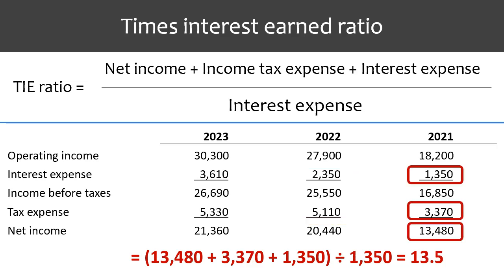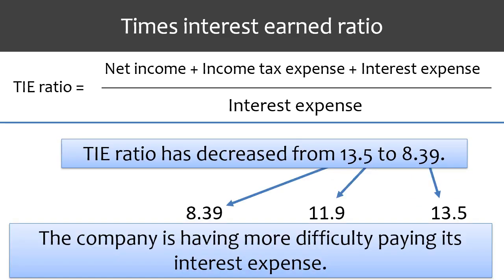And finally, for two years back, we do the same process. The times interest earned ratio is calculated as 13.5 rounded. Now that we have the times interest earned ratios for three years, we can see that the ratio has decreased over the three years. The company is having more difficulty paying its interest expense over the past three years.